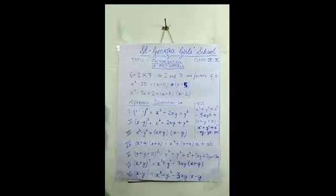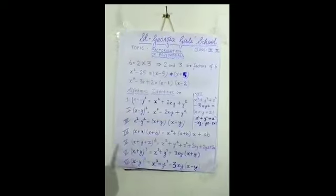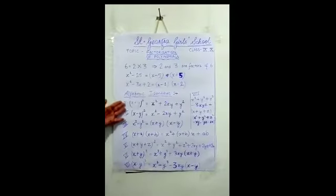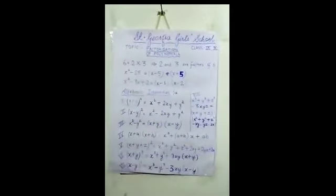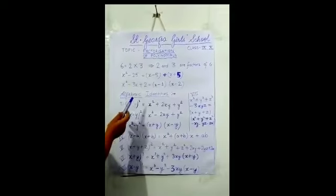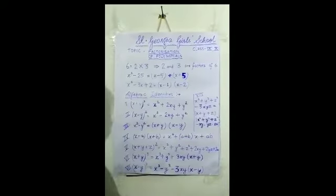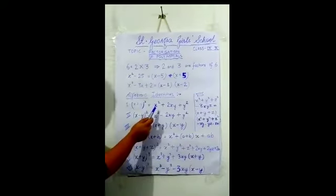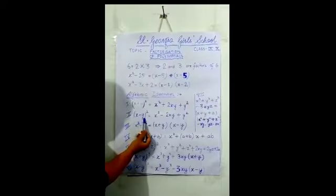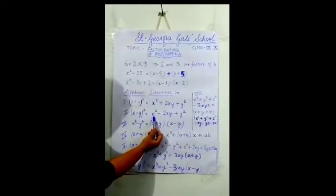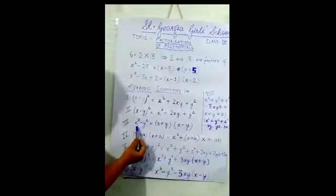So what is the fundamental used when factorization takes place? There are a few algebraic identities that you must remember in order to factorize these polynomials. You can see they are mentioned here — you have to learn each and every one. The first algebraic identity is: (x plus y) whole square equals x squared plus 2xy plus y squared. The second is: (x minus y) whole square equals x squared minus 2xy plus y squared.